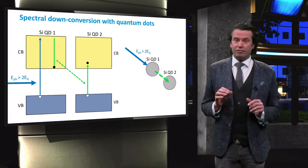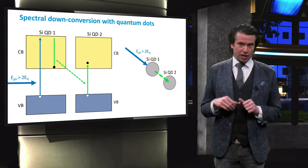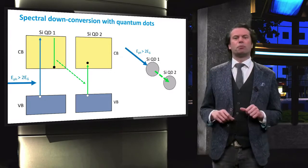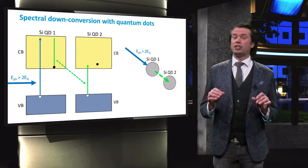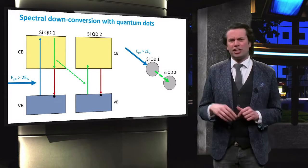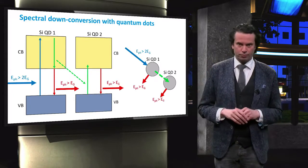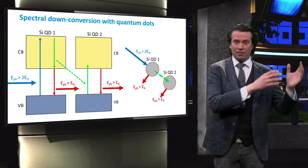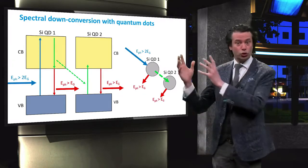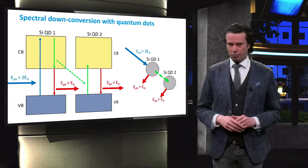If non-radiative recombination mechanisms like Auger recombination and Shockley-Read-Hall recombination are sufficiently suppressed, the electron hole pairs in both quantum dots can radiatively recombine such that each of the two dots emits one reddish photon. As such, one incident bluish photon is converted into reddish photons, which can be absorbed by a PV material.